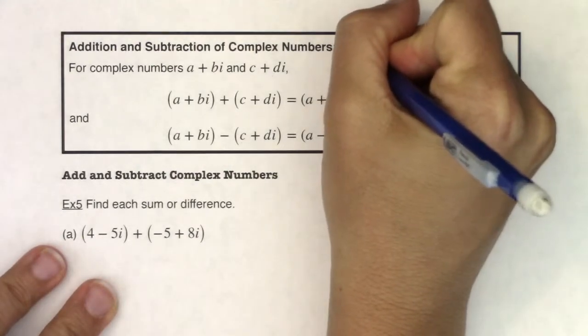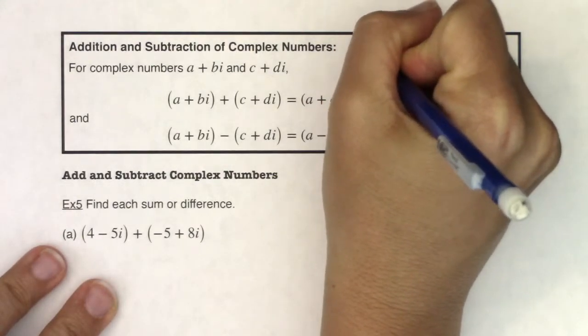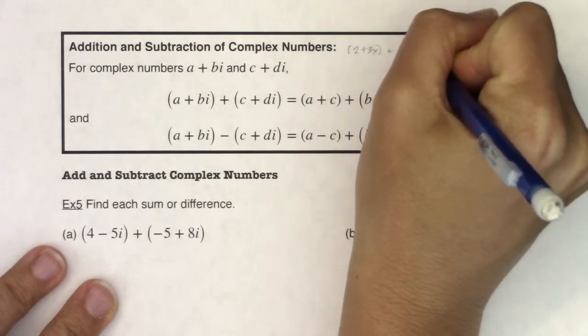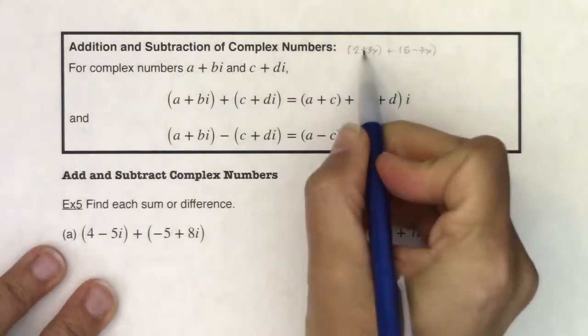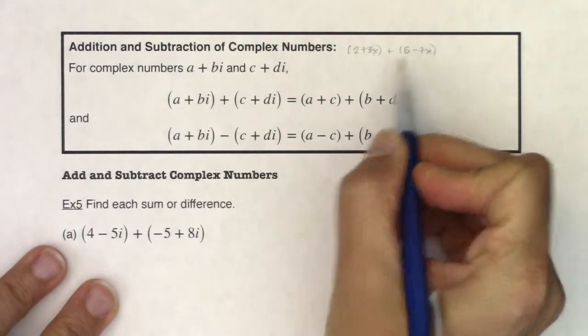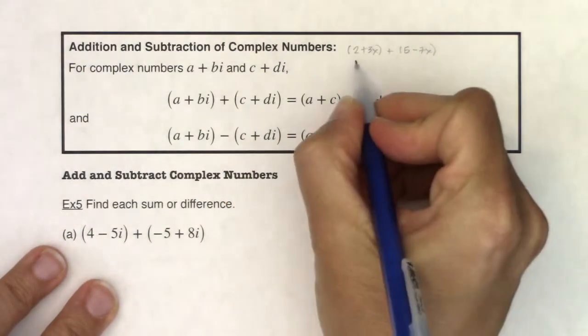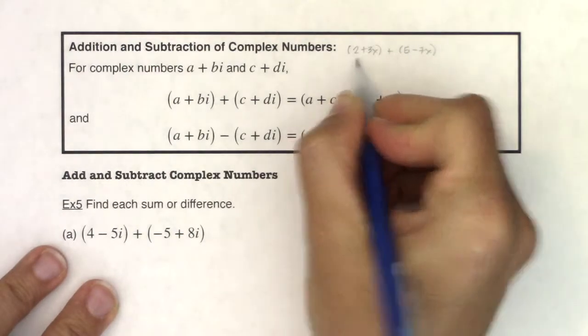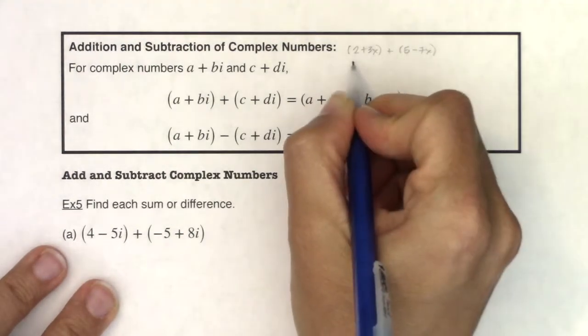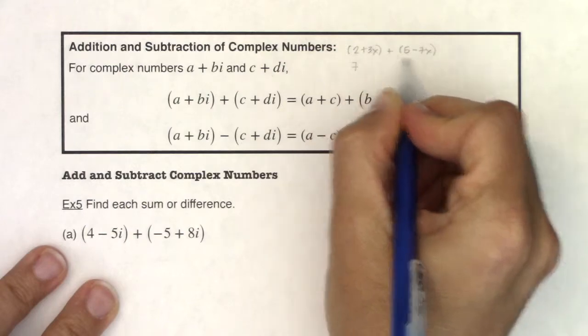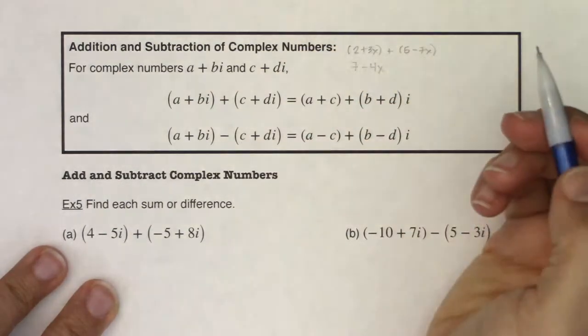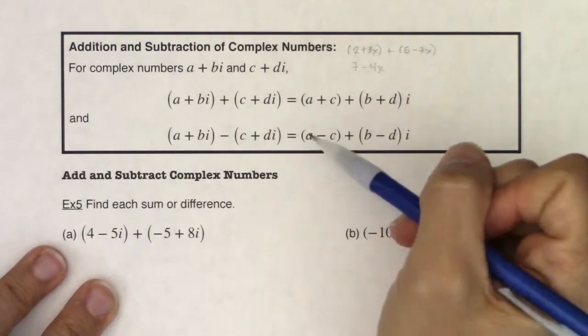But let's say I had something like 2 plus 3x plus 5 minus 7x. If I had those two binomials in parentheses, much in the same way we did here, we would do 2 plus 5. Those are constants. So we would add those and get 7. And then 3x minus 7x, those are like terms, and I would get negative 4x. The same is true here.